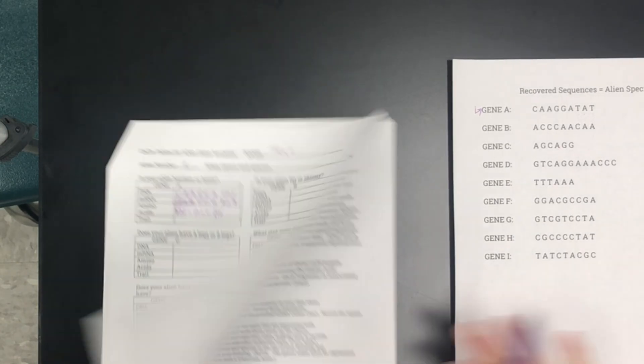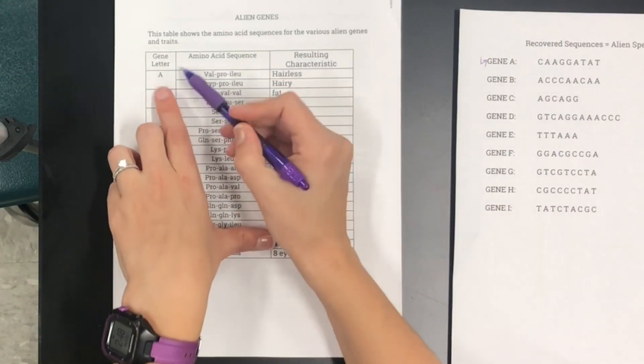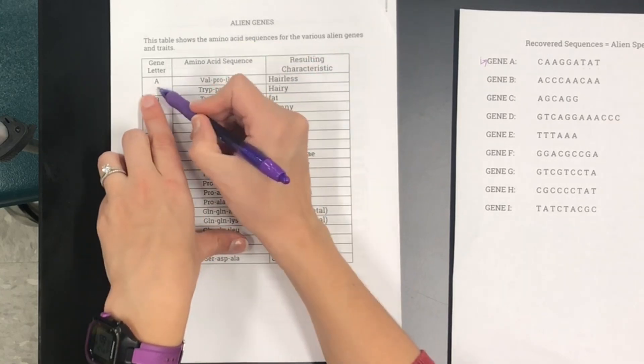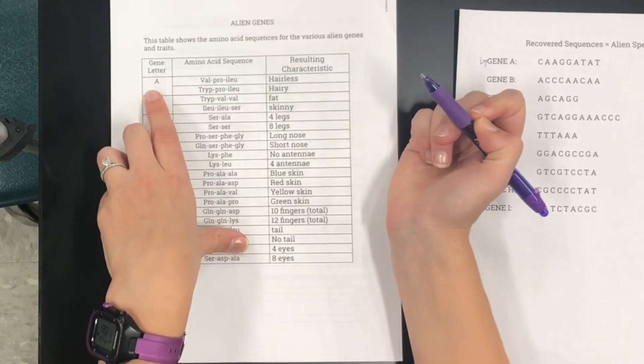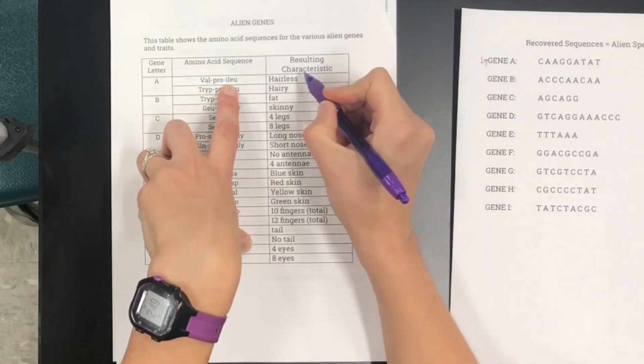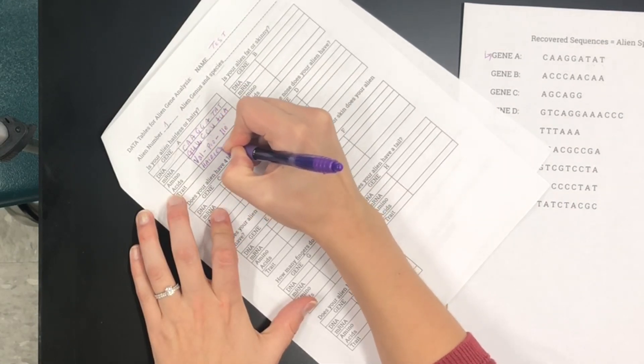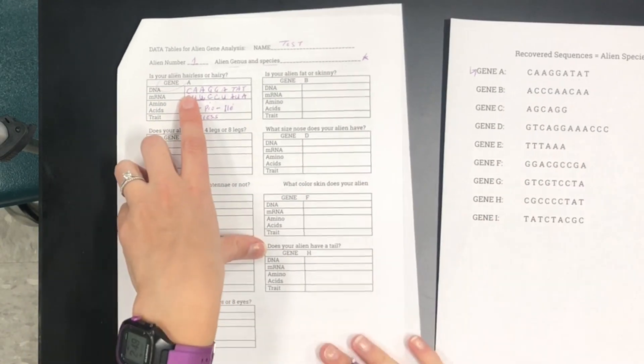So now we're going to look on our alien gene sheet. So we have our gene letters so we're going to start with gene letter A and we're going to see what characteristic matches up. So our alien had valine, proline, and isoleucine so that means our alien is hairless. We're going to have a bald alien so we're going to put that here in this last row for our first gene.